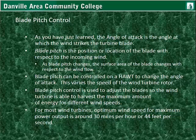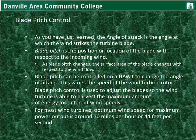Blade pitch is usually controlled on larger systems by a control system. Blade pitch on a horizontal axis wind turbine changes the angle of attack, which varies the speed of the rotor. It's also used to make sure the critical angle is always achieved with different wind speeds, since the critical angle changes as wind speed changes. Blade pitch control adjusts the blades so the wind turbine can harvest the maximum amount of energy for different wind speeds. For most wind turbines, the optimum wind speed for best power output is around 30 miles per hour, which is 44 feet per second, or about 48 kilometers per hour.